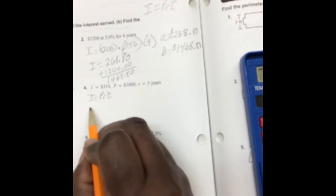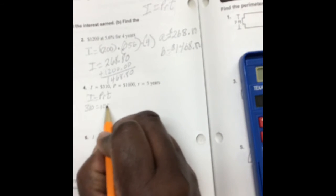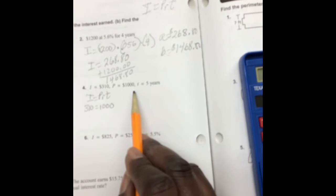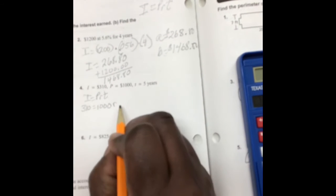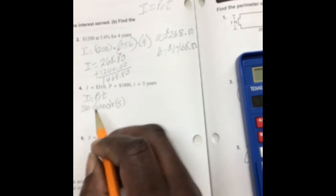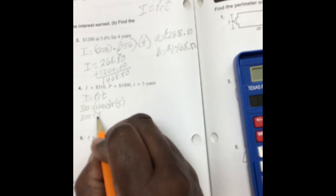So I is 310, P is 1000, and R we do not know, and T is 5. So let's multiply 310 equals to 5000 R.